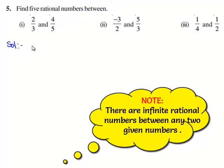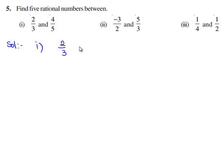Let us first solve part (i): finding 5 rational numbers between 2/3 and 4/5. We'll express these rational numbers with a common denominator.